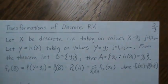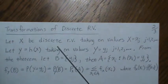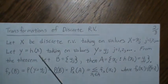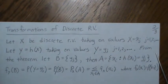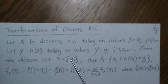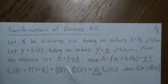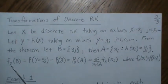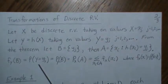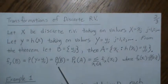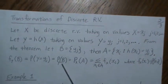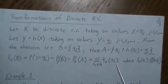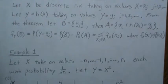So for transformations — let X be a discrete random variable taking on values x_j, and let Y be a function of X taking on values y_j. Then from the theorem, if we let B be one element called y, then A is the pre-image of B — all the X's that are mapped to y. So the distribution of Y, which is the probability of Y in B (just little y_j), is the probability of X being in A, which is the sum of probabilities of all those X in A.